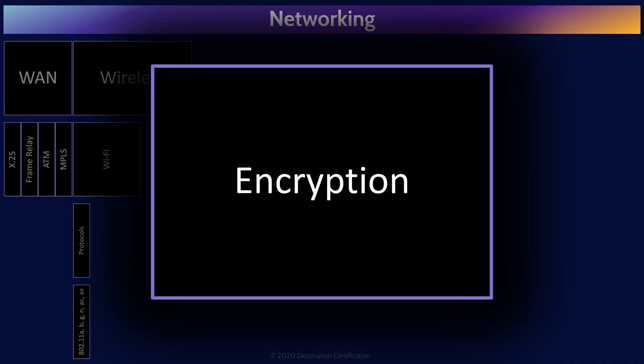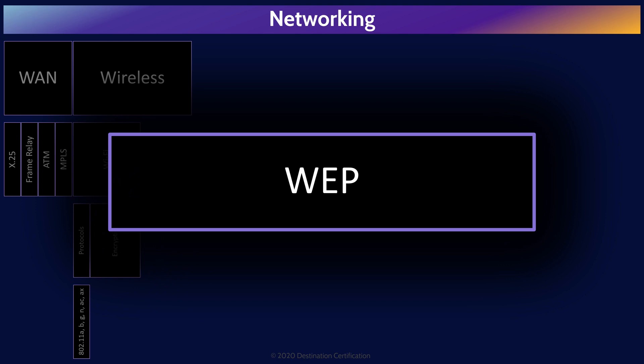It is critically important to encrypt wireless traffic as it is so much easier to eavesdrop on a wireless network. One of the first wireless encryption protocols created was WEP, Wired Equivalency Privacy. WEP absolutely does not live up to its name. Very significant flaws have been found in the WEP protocol related to how it implements the RC4 encryption algorithm. Specifically, the initialization vectors used are far too short, meaning that WEP encryption can be easily broken and should never be used. The band-aid created for WEP was TKIP, Temporal Key Integrity Protocol, which has subsequently also been found to have significant flaws and should therefore not be used.